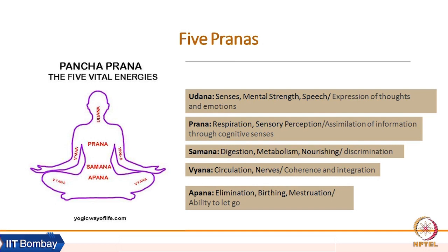Samana prana is active in the abdominal area, around the navel, and is responsible for the efficiency of digestion, metabolism, and nourishment. At the emotional level, it is related to our power of discrimination — our ability to distinguish right and wrong, and in the yogic tradition, our ability to distinguish truth from untruth. This ability of discrimination is related to samana prana.